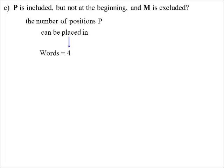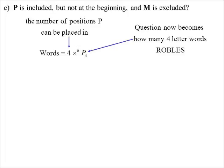Now P is included but not at the beginning, and M is excluded. Look after the condition: P can go in any of the four non-first spots — four ways. M is excluded, so the remaining letters are R, O, B, L, E, S — that's 6 letters for the other four spots. So the answer is 4 × 6P4 = 4 × 360 = 1,440.